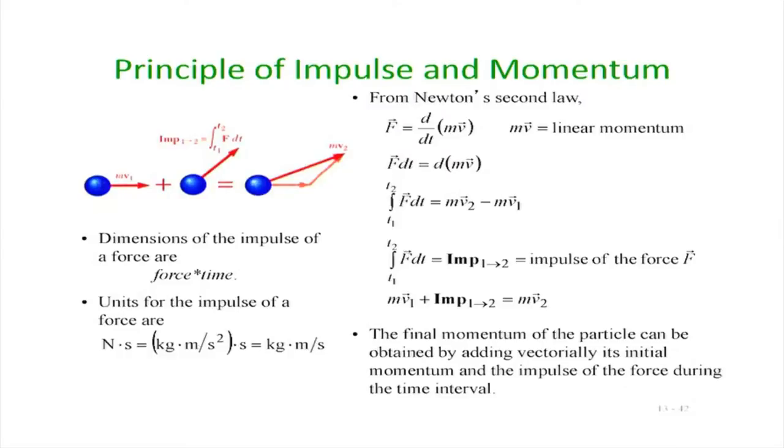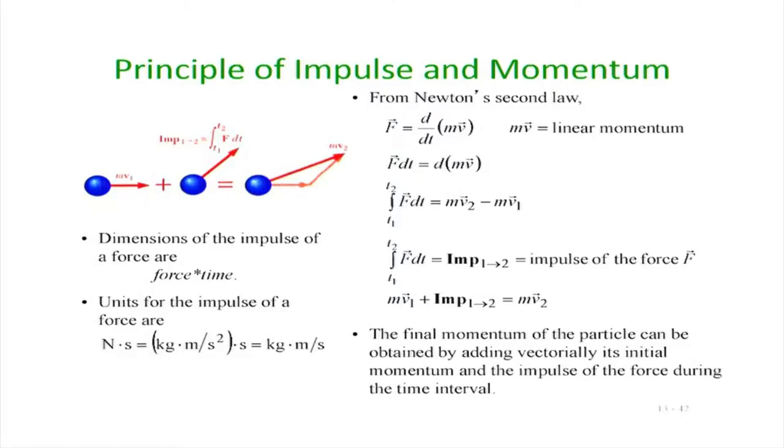We also saw that the work-energy theorem can be expressed in the language of conservation of energy if the forces are conservative: T1 plus V1 equals T2 plus V2, where V1 can come from gravity, V1 can come from spring energy, and if an additional electric field is put in we can also include the electric field potential energy. For the time being, our V is only based on potential energy from gravity and from springs.